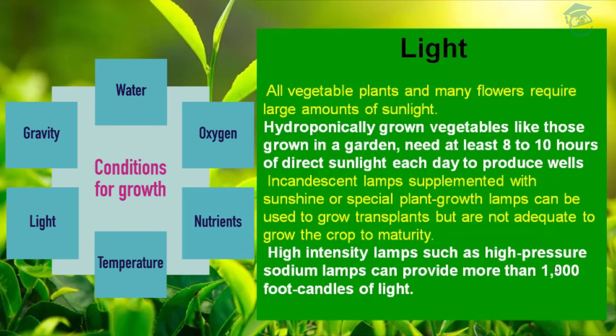High intensity lamps such as high pressure sodium lamps can provide more than 1000 foot candles of light. Light is also called radiant energy. Quality, intensity, and duration of light are all important. Quality of light cannot be controlled on a field scale. Intensity — that is, brightness — is important for carrying out photosynthesis. Duration refers to photoperiodism, meaning plant behavior in relation to day length.